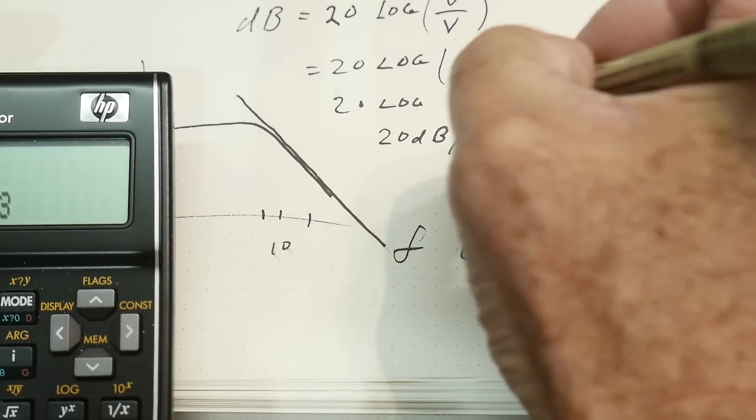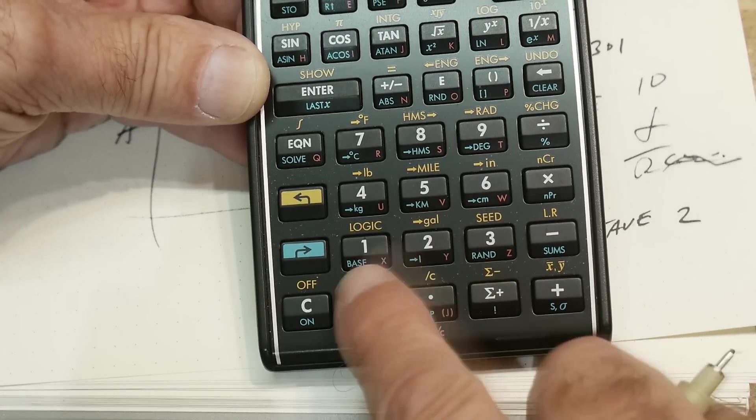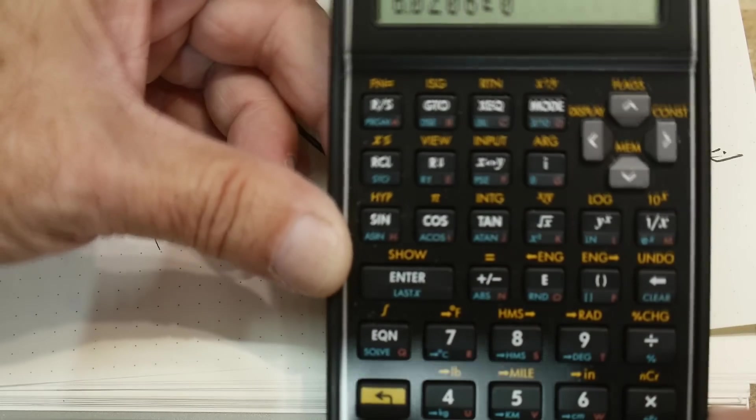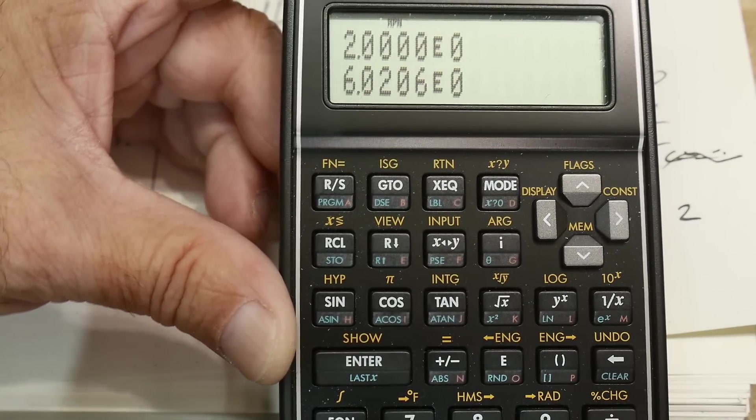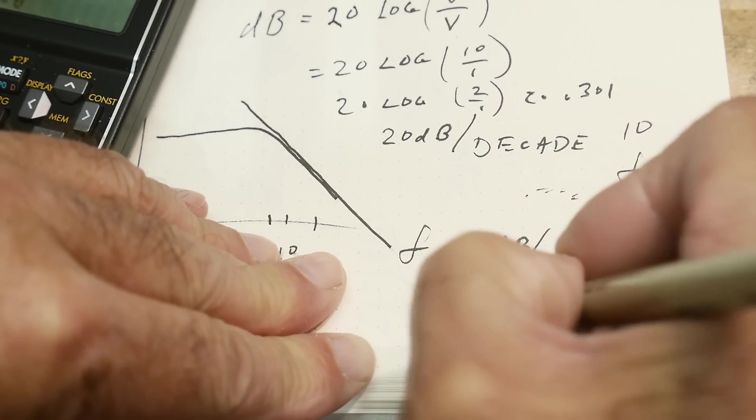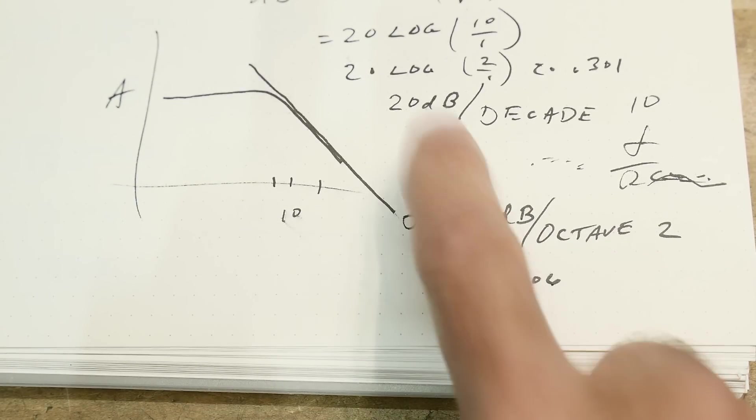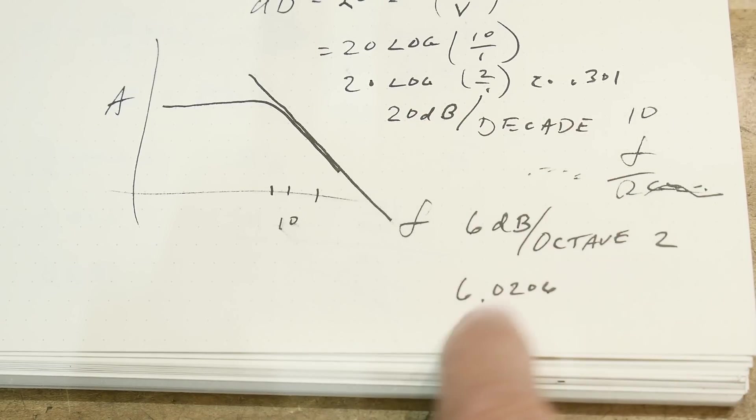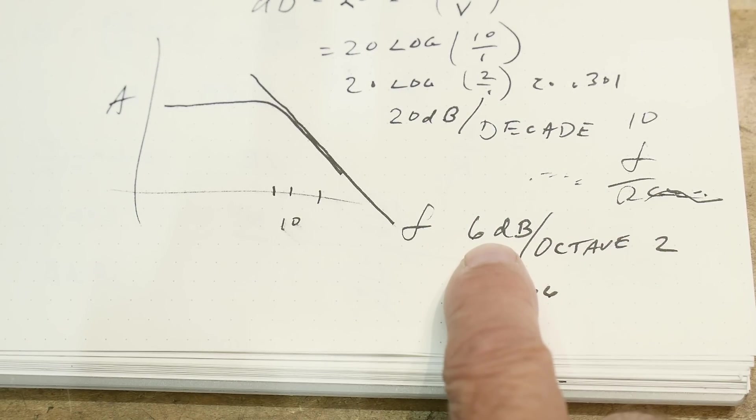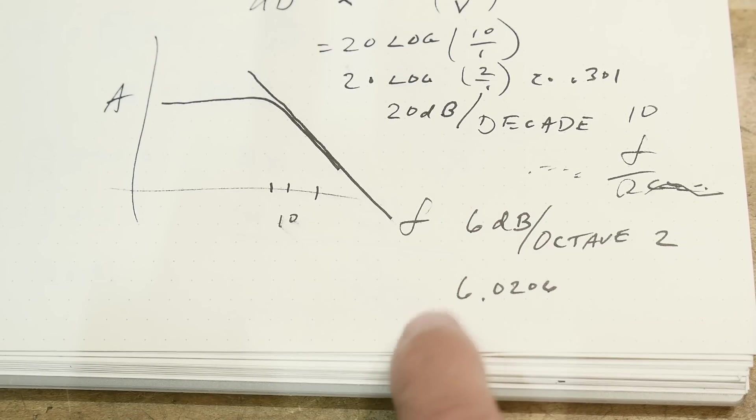This is 0.301 times 20. Multiply this by 20 and you get 6.0206.